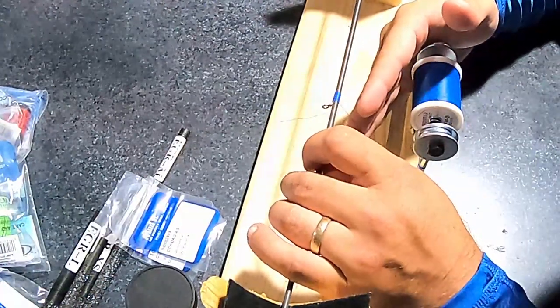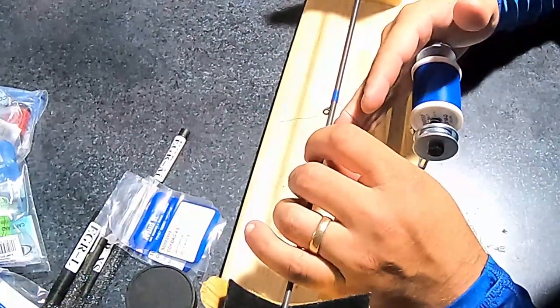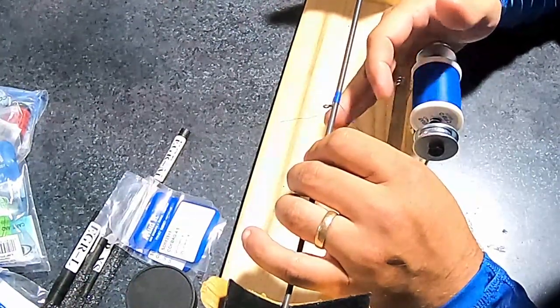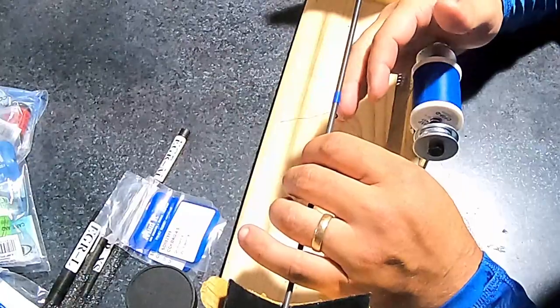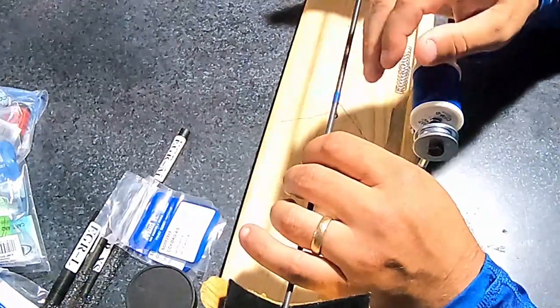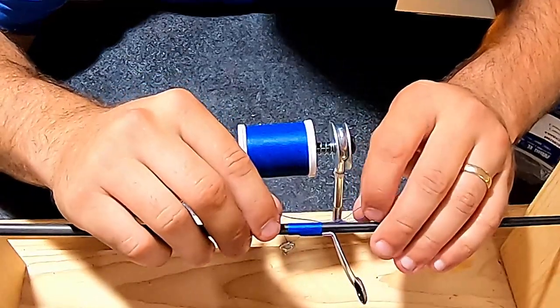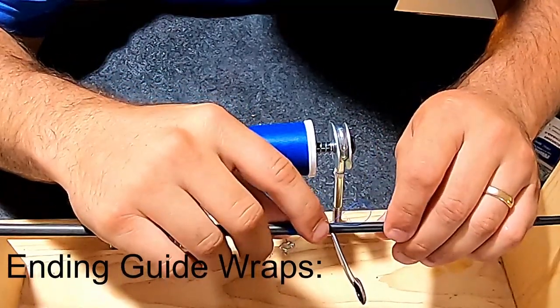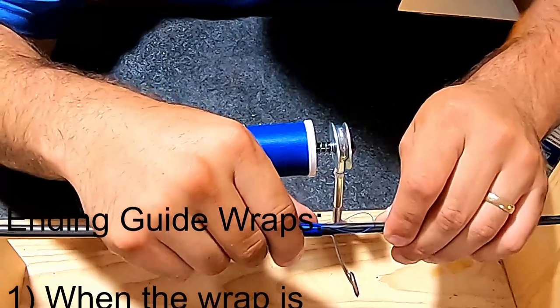At the guide foot, if you have a very thick guide foot, it can be helpful to sand it down on a fairly fine piece of sandpaper, just to make that a little easier for the thread to climb up on, the very tip of that guide foot. In this case, I didn't need to on these. These are pretty small guides, and the thread ran right up onto them.